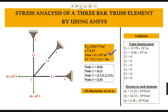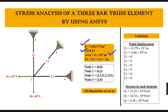The inputs we are going to provide include the Young's modulus value, the Poisson's ratio value, and the cross-sectional area — all of these will be entered in ANSYS.